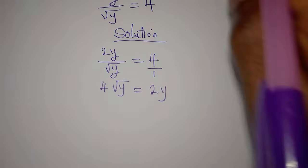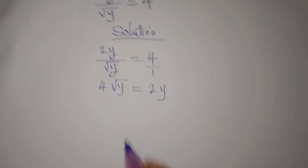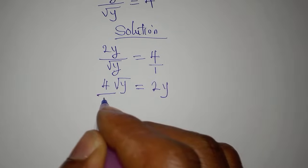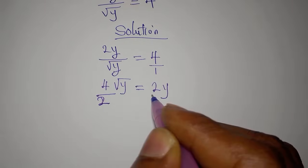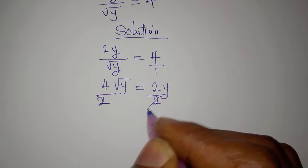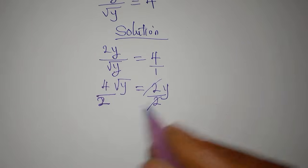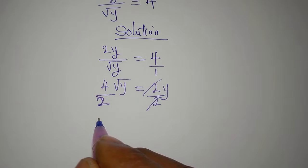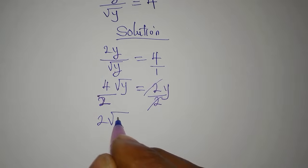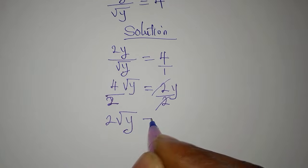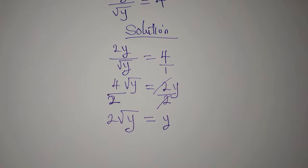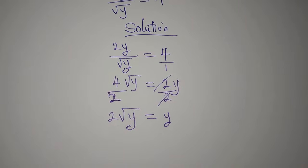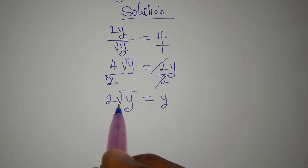As a matter of fact, we can reduce the equation by dividing by 2. So let's divide both sides by 2 — 2 into 4 is 2 — so we have 2 root y, which is equal to y.